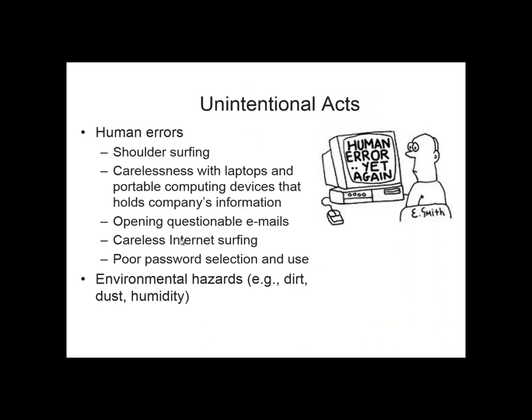For unintentional acts, human errors can include shoulder surfing, which is explained in a later slide. They also include carelessness with laptops and portable computing devices that hold company information, opening questionable emails from spam sources which might be phishing for personal information, careless internet surfing that might allow spyware to be installed, poor password selection and use, and environmental hazards such as dirt, dust, and humidity.